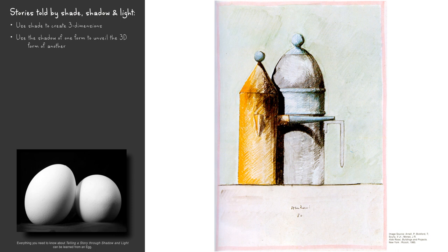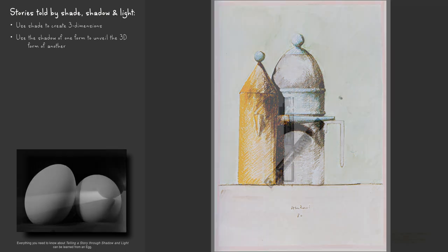This drawing of two coffee pots by an architect also tells another story. The bent handle reads as a gateway, while the curved shadow of the straight handle reads as a shadow gateway.